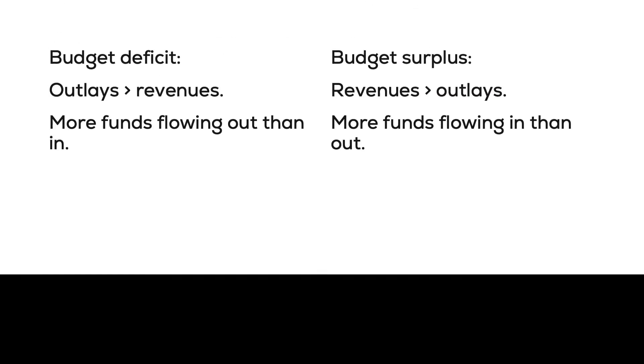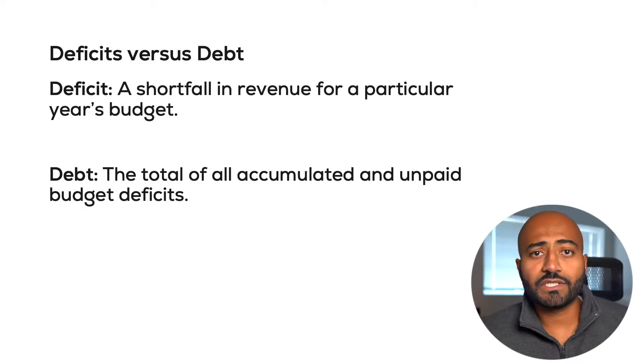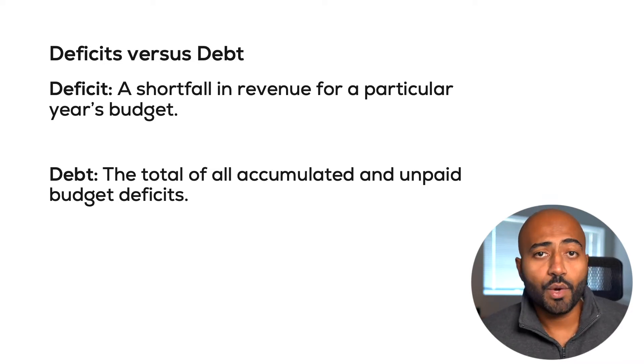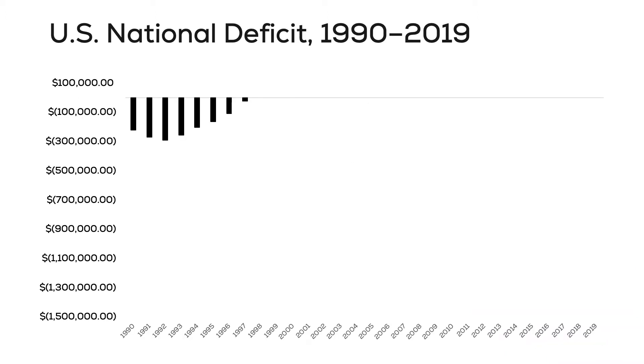The accumulation of deficits leads to debt. On the other hand, a surplus means that your outlays or spending is less than your revenue during a specific time period. Surpluses can be used to accumulate savings for the government, or if there's outstanding debt, a surplus can be used to pay it off. It is a common mistake to confuse deficits for debt and vice versa. A deficit is a measure based on time — a flow — whereas debt is a measure of accumulation — a stock.